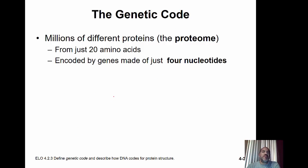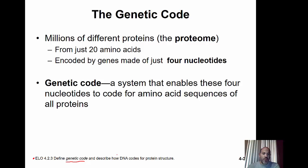Millions of different proteins are referred to as the proteome — all of the possible proteins produced within a given cell. This proteome is made from just 20 different amino acids, encoded by genes made of just four nucleotides. To go from a gene in DNA to a protein, we have something called the genetic code — a system that enables the four nucleotides to code for amino acid sequences of all proteins.